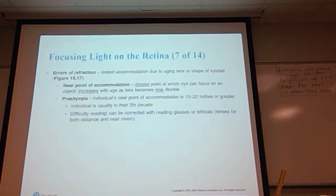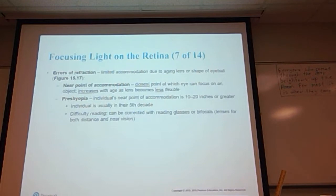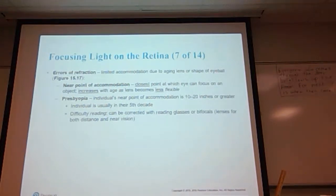Presbyopia occurs when an individual's near point of accommodation is 10 to 20 inches or greater. It usually occurs in an individual in their 50s, sometimes late 40s — you'll have difficulty reading. It can be corrected with reading glasses or bifocals. Bifocals are glasses that have two different prescriptions in them — one for near vision and one for distant vision.